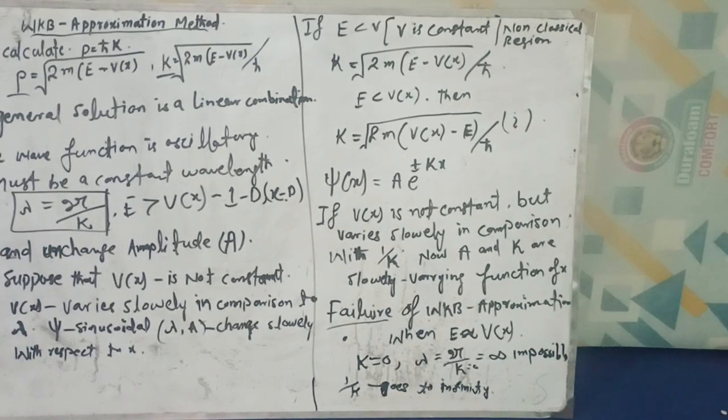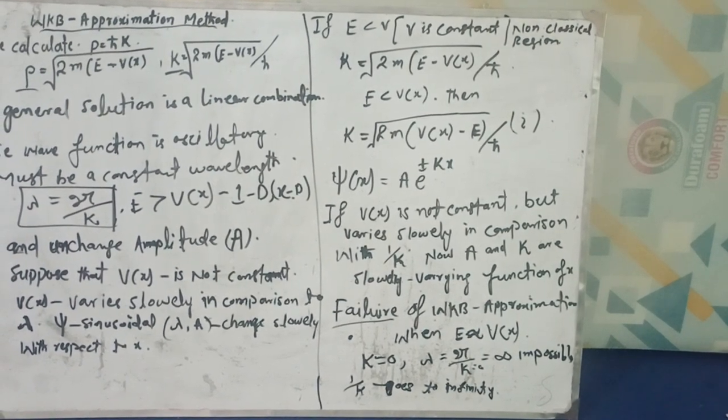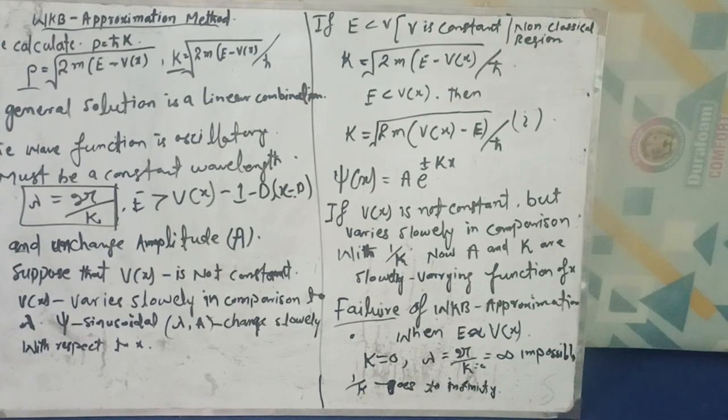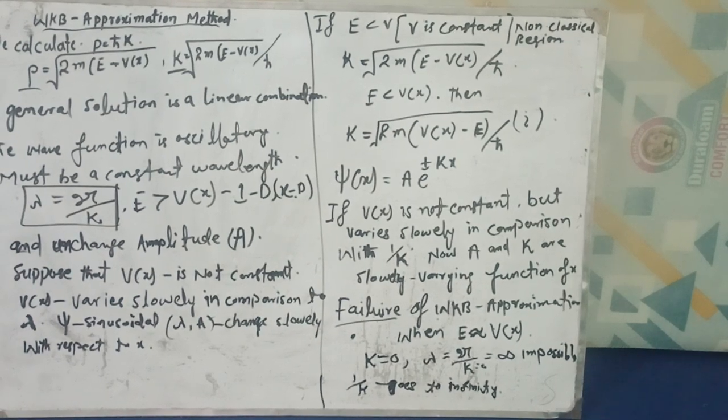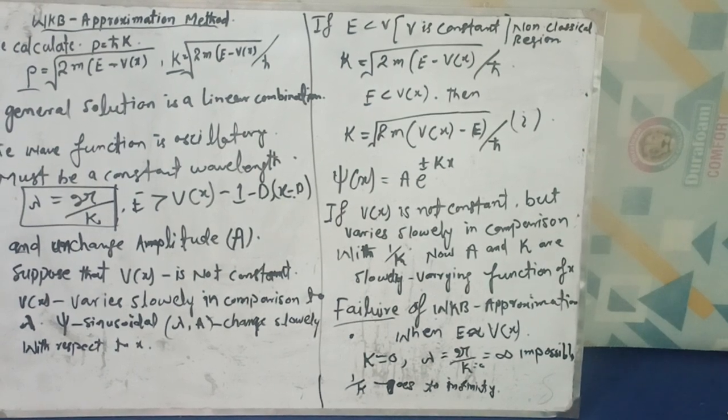When the energy is less than potential, we will switch the potential and energy. Then k will be equal to 2m(V(x) - E)^(1/2) / ℏ.